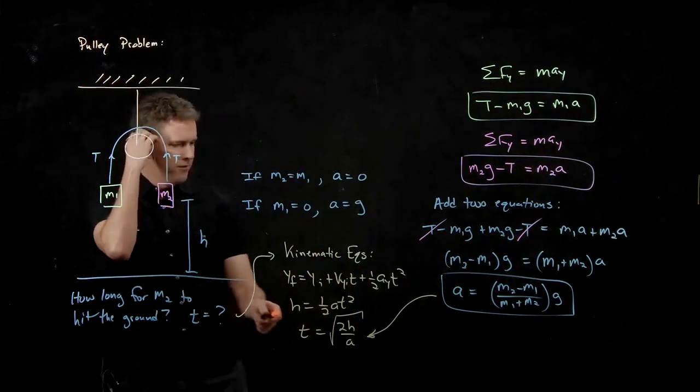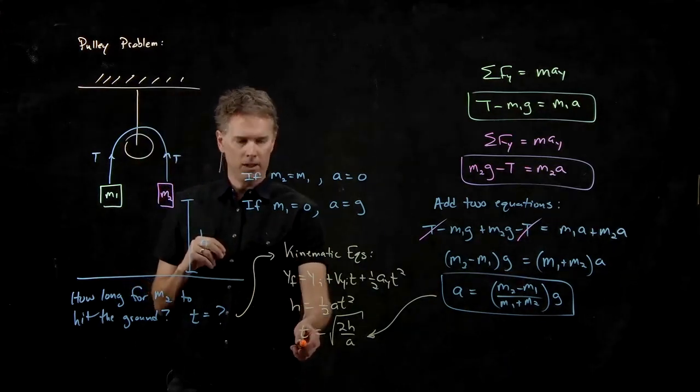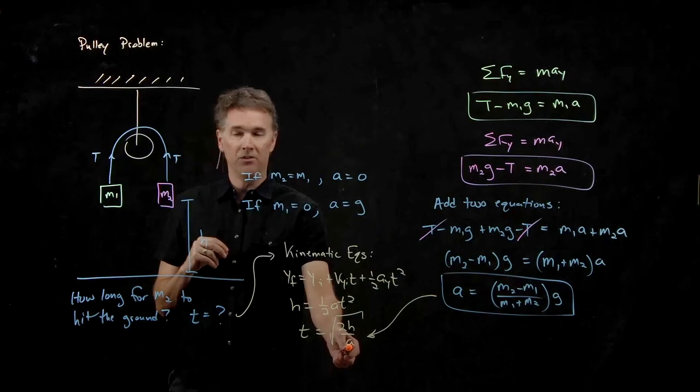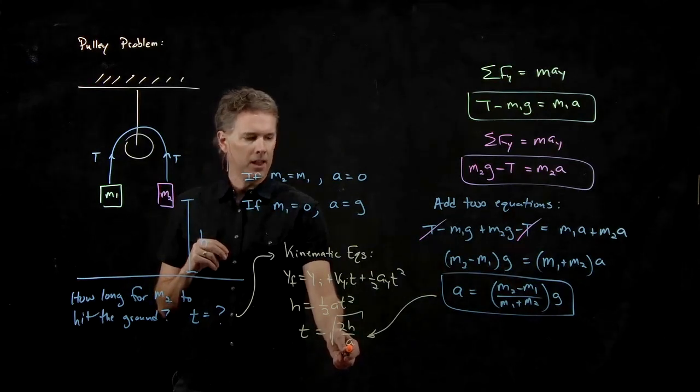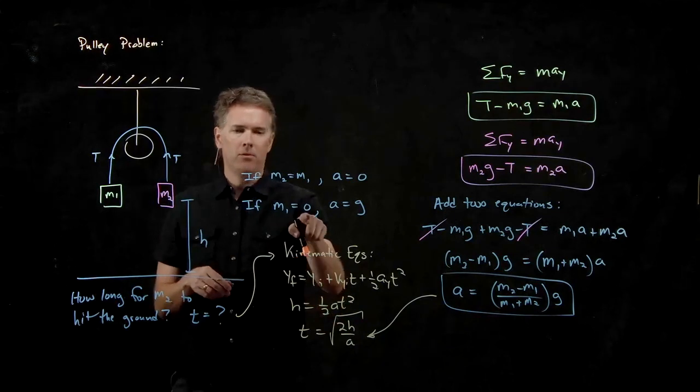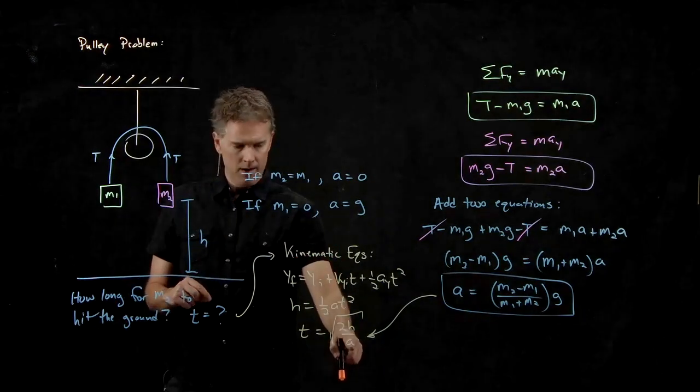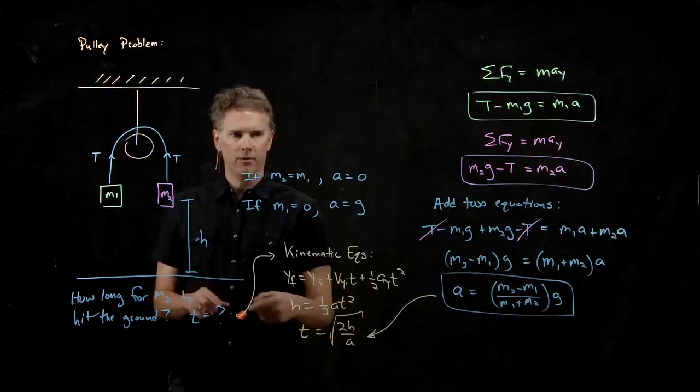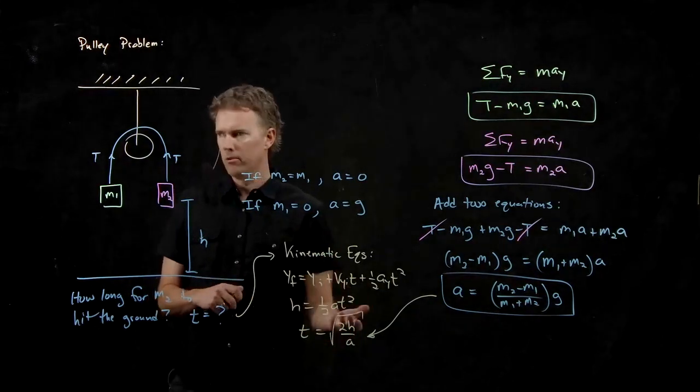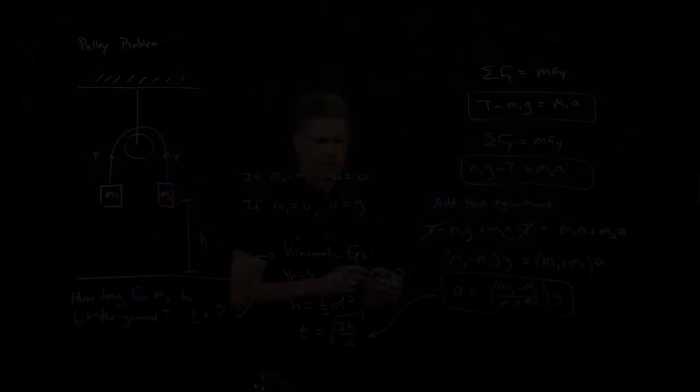And you can just verify that if those masses were equal, it would never hit the ground, right? Because A would be zero and this thing would blow up to infinity. If mass one was zero, then we put a G down there and this becomes good old freefall. How long does it take to hit the ground? Square root of two H over G. All right, questions about that one?